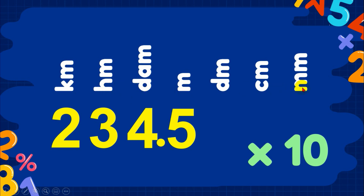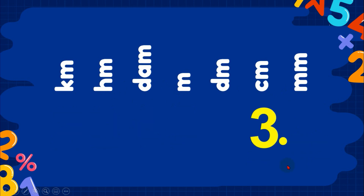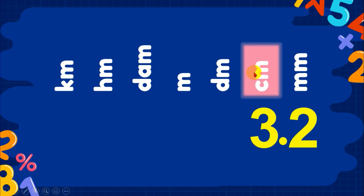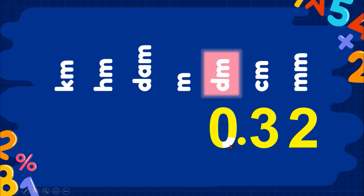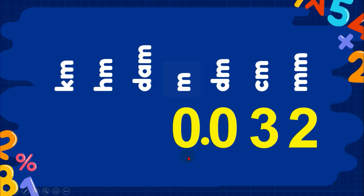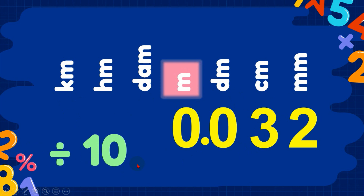If we move from kilometer to meter, that's three moves to the right — times 10, times 10, times 10. Now, if we have 3.2 centimeters and want to convert to decimeters, we move the decimal one place to the left, giving 0.32 decimeters. To convert 3.2 centimeters into meters, we move the decimal point another place to the left. Moving to the left means dividing by 10 per move.